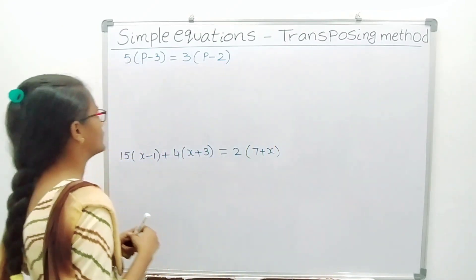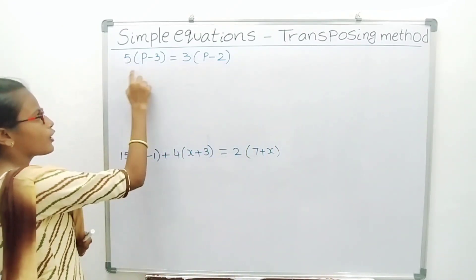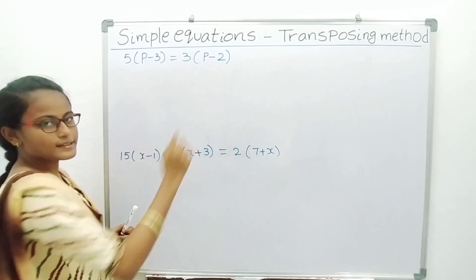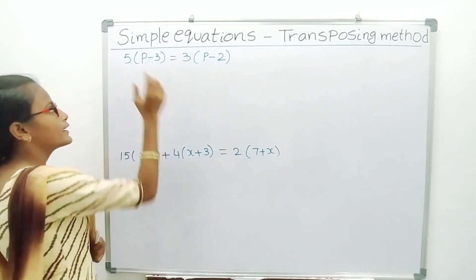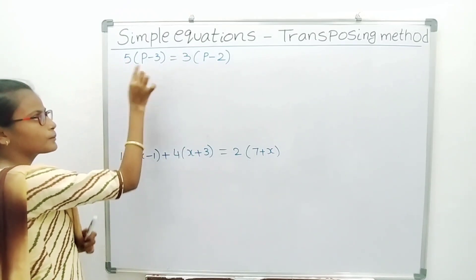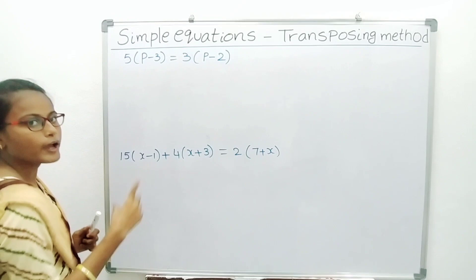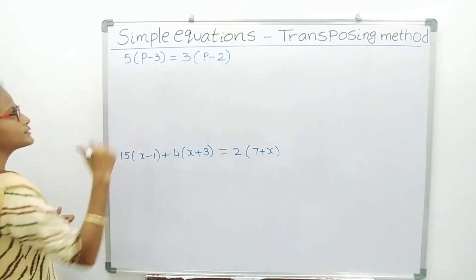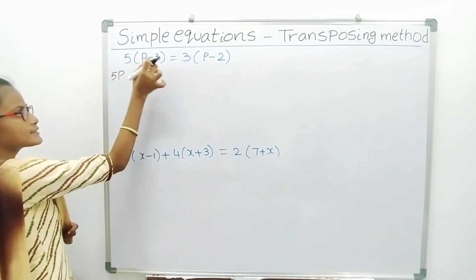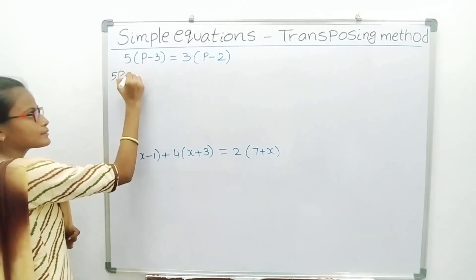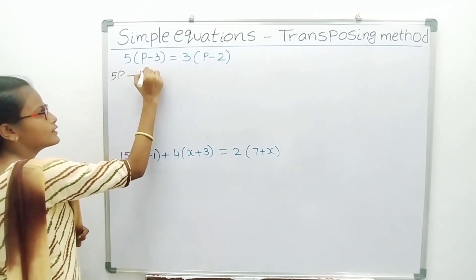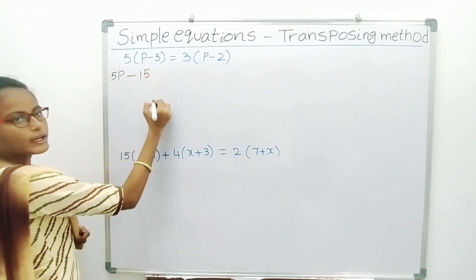Come to the problem. 5 of (P minus 3) is equal to 3 of (P minus 2). Here 5 of (P minus 3) means 5 into P, which is 5P. Plus into minus gives minus; 5 into 3 is 15.